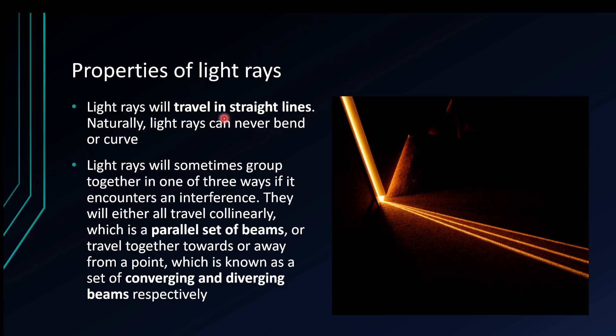Light rays will naturally travel in straight lines, so they can never bend or curve. We will see that they can bend in a way when we get onto a thing called refraction, which is the bending of light. But if there's nothing in the way, for instance this light going through this door, it will always travel in a straight line.